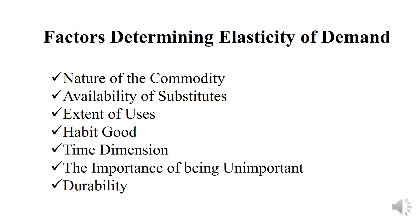The fourth factor is habit goods. Some commodities consumed out of habits and conventions have inelastic demand. For example, even in the face of rising prices of those commodities or falling income, people will continue to consume them.